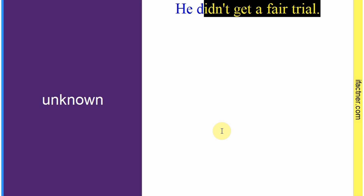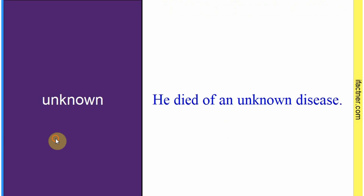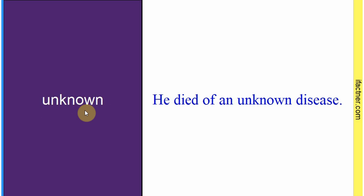Word hai: 'unknown'. Sentence banaate hain: 'He died of an unknown disease.' Woh ek aisi bimari se mara jis ke baare mein hum nahin jaante. Toh 'known' ka matlab hota hai 'jaana hua', aur 'unknown' ka matlab jis cheez ke baare mein hum na jaante hon. Sentence banaaya: 'He died of an unknown disease.'